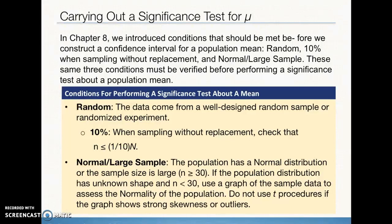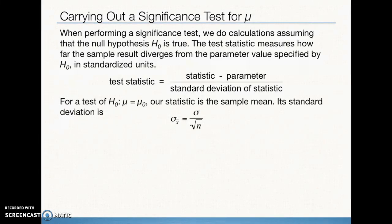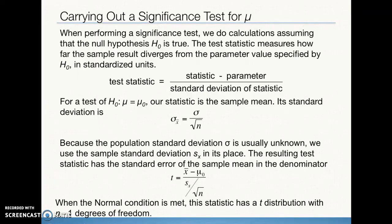Once conditions are met, we proceed. When running significance testing, we always assume the null hypothesis is true and try to collect evidence from our sample that proves it is not. We come up with a test statistic — because it's based on the T distribution, we call it a T test statistic, not a Z test statistic. The formula is the same though: statistic minus parameter divided by the standard deviation of the statistic. Since we're testing a population mean, the test statistic is based on the sample mean, using the standard error because we don't know the population standard deviation. We use a T distribution with n minus 1 degrees of freedom.